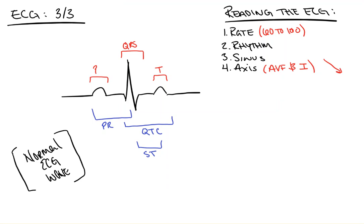A left axis deviation, for example, would have a positive deflection in lead 1 but a negative deflection in lead AVF.